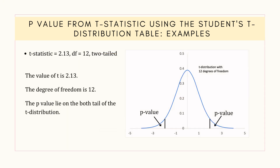Now moving on to the second example, the t-statistic is 2.13. The t-statistic follows a t-distribution with 12 degrees of freedom and the p-value lies on both tails of the t-distribution. In the t-distribution plot, the area under the curve on both sides of the absolute t-value of 2.13 represents the p-value.